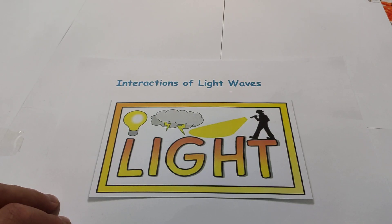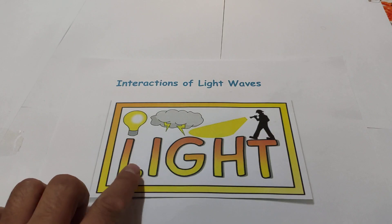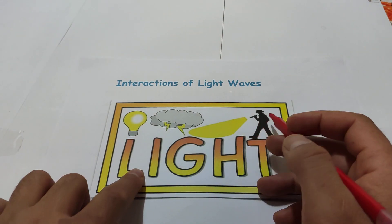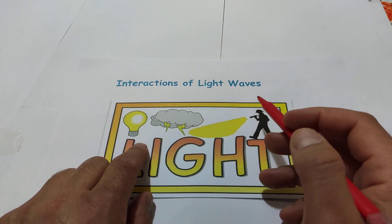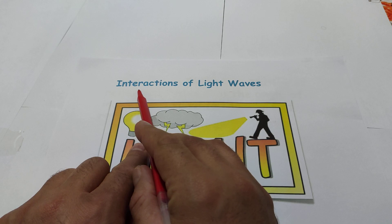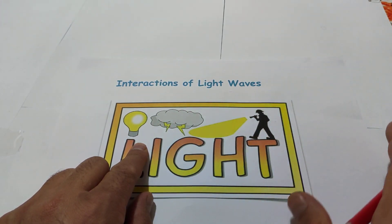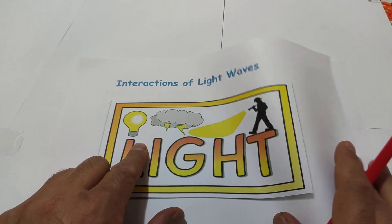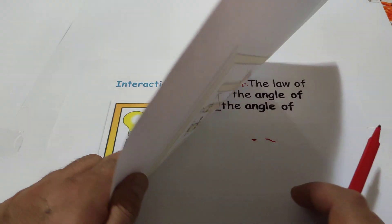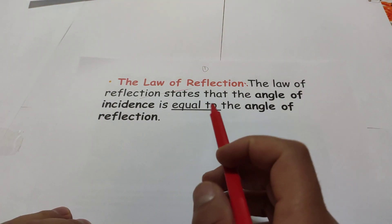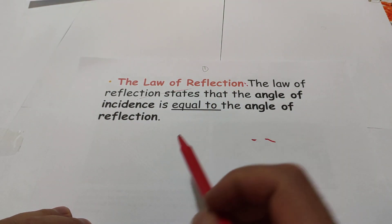Hello students, today our topic is light, chapter 15, section 3. What is section 3? Introduction of light. Let us start our section: the law of reflection.